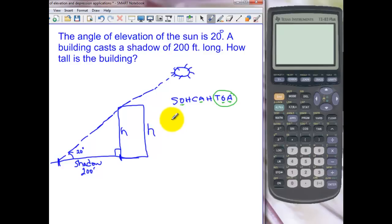So our equation that we're going to set up is going to be tangent of 20 degrees equals opposite which is h over our length of our shadow which is adjacent to the angle. So we solve for h by multiplying by 200. And then we need to use a calculator to calculate that. This is not a special angle.